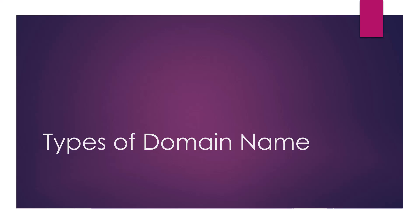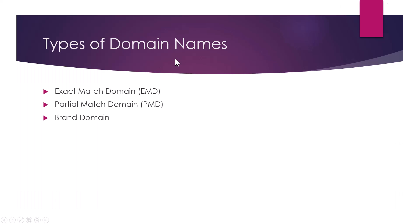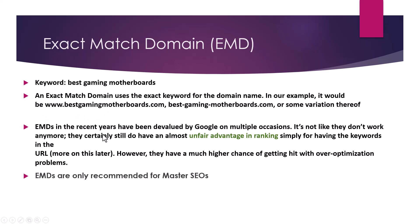Hello SC pros, in this tutorial we shall learn about the different types of domain names. There are three types of domain names. The first one is exact match domain, EMD. The second one is partial match domain, PMD. And the third one is random domain.